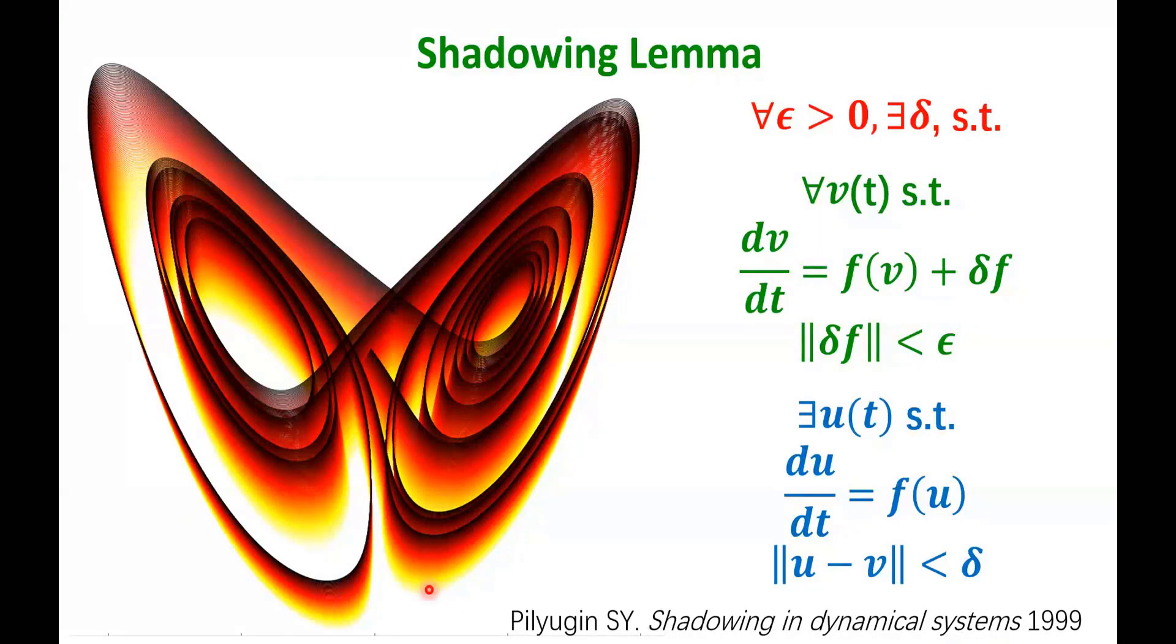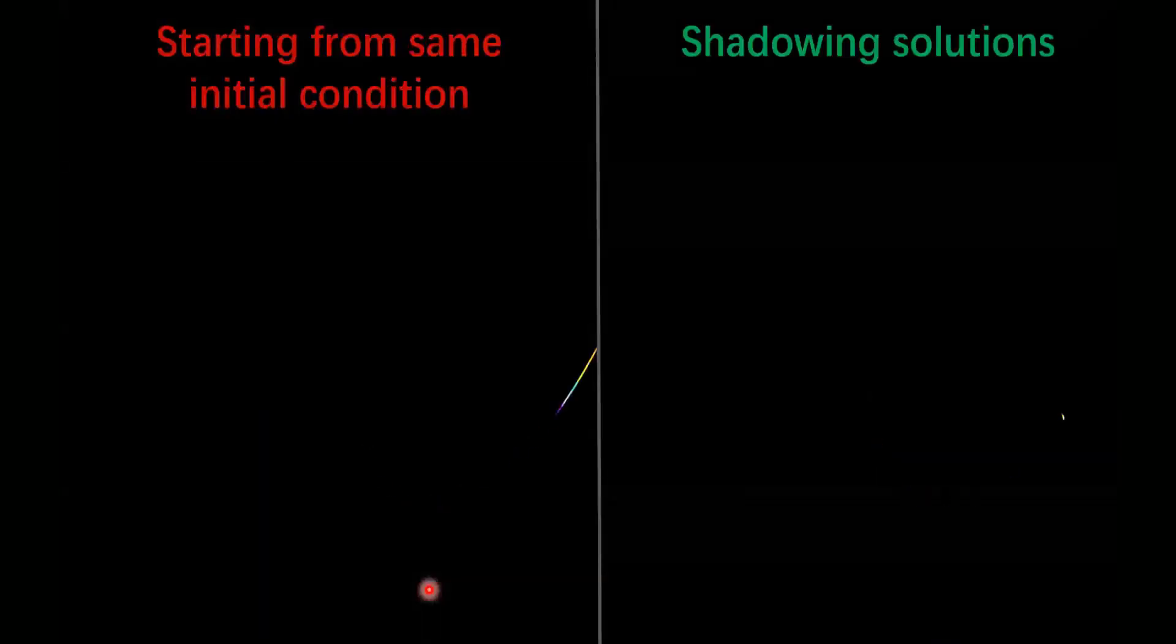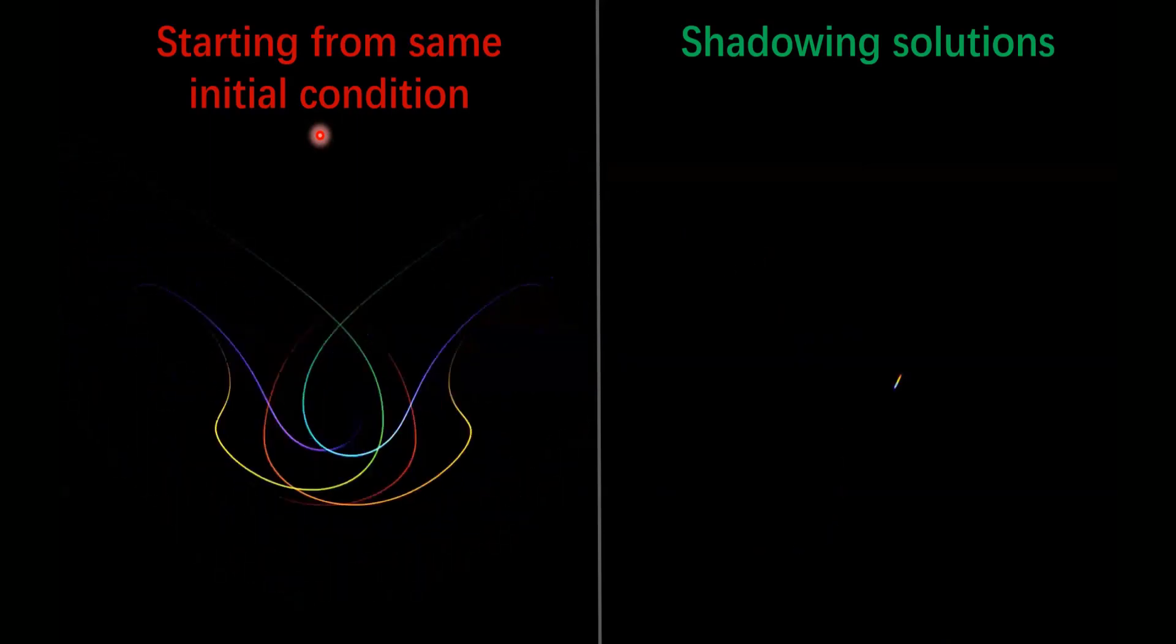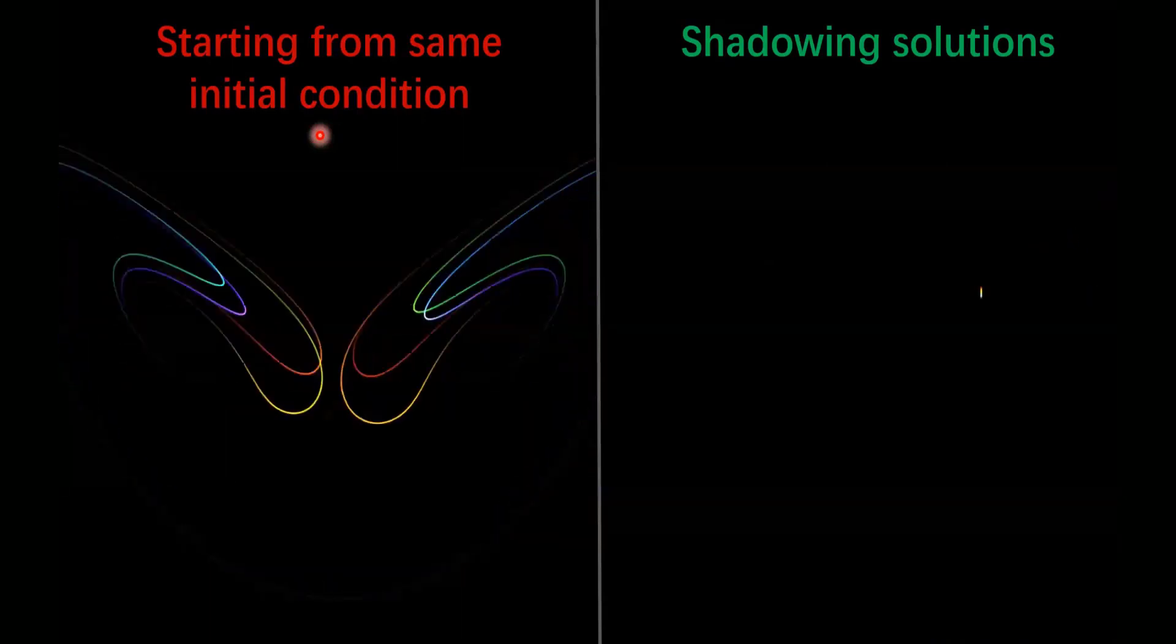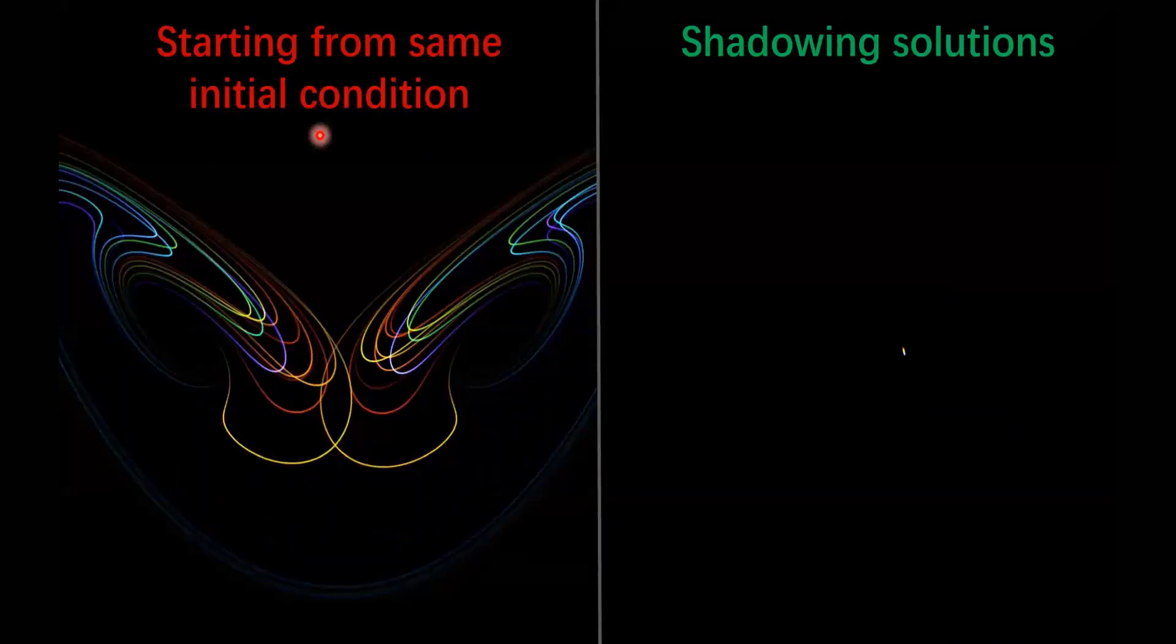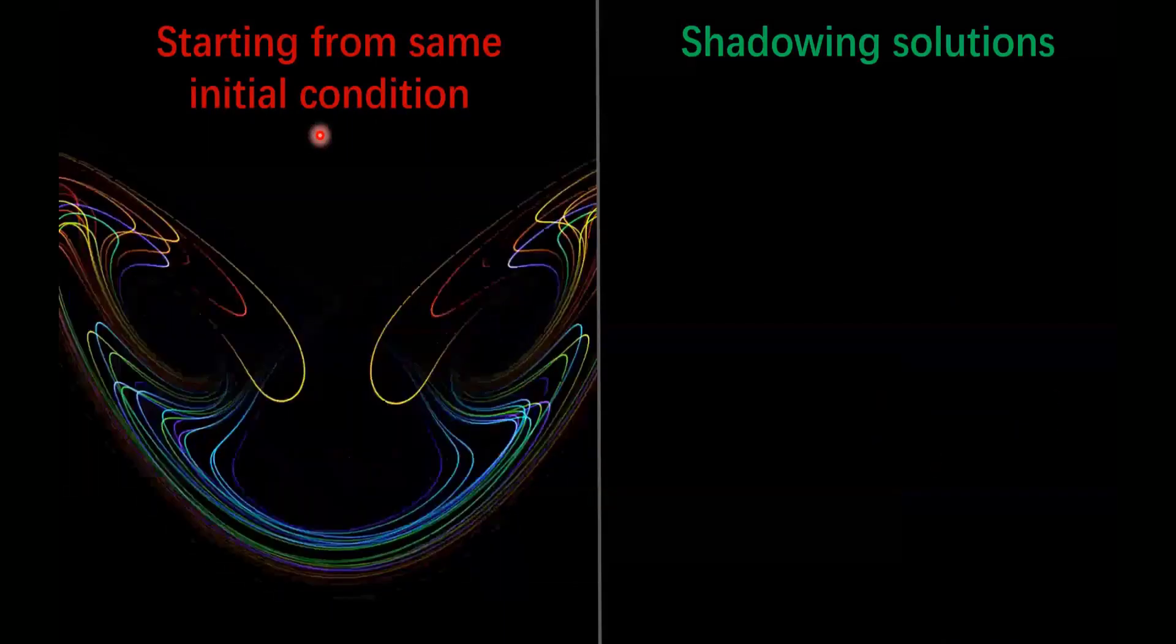This is a video of a set of solutions for the Lorenz equation. In this case, the color actually denotes different magnitude of perturbations. On the left, we are starting all the equations from the same initial condition. You can see that under different magnitude of perturbation, the trajectories become different pretty quickly and you see the butterfly effect. As the solutions become different, made different by the different perturbations, they diverge from each other exponentially.